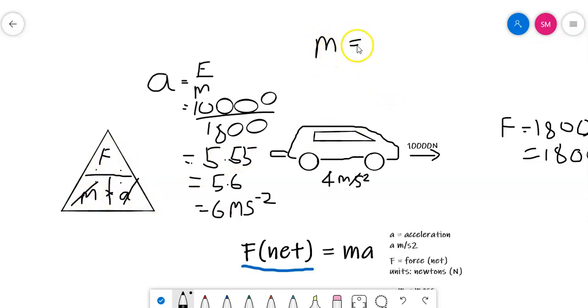So M equals the force, 10,000, divided by 4. And that equals 2,500.